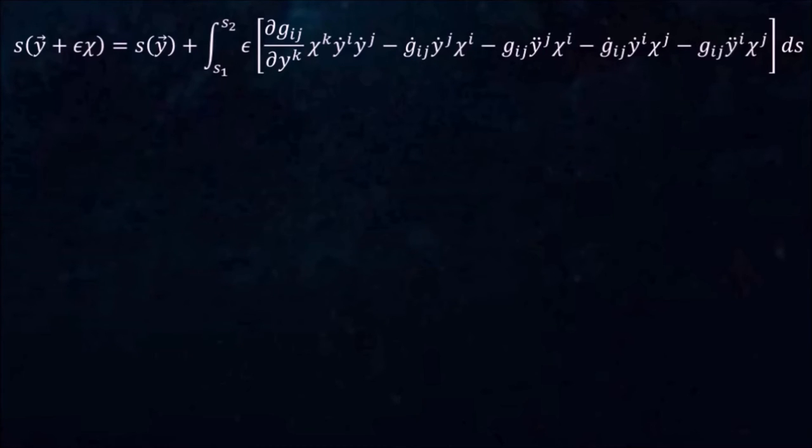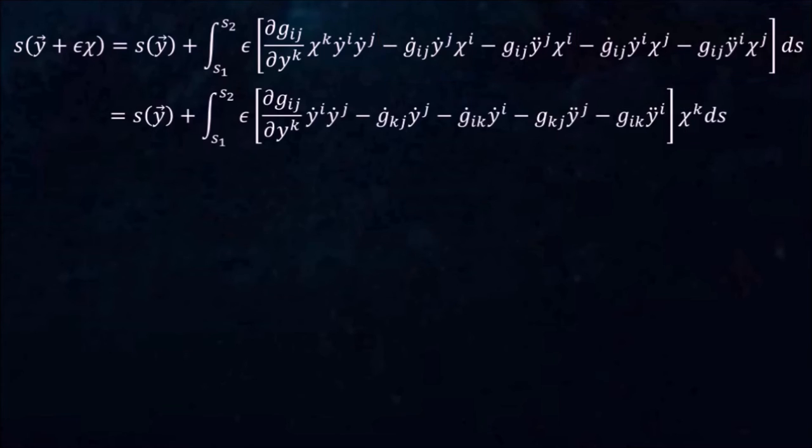Notice that all indices here are summed over, and therefore we can relabel them any way we want. Let's relabel them as follows. This allows us to factor out chi. Remember that in order for y to be a geodesic, this integral must be 0. But given that chi is arbitrary, this is possible only if the expression in the brackets is 0 for all moments.